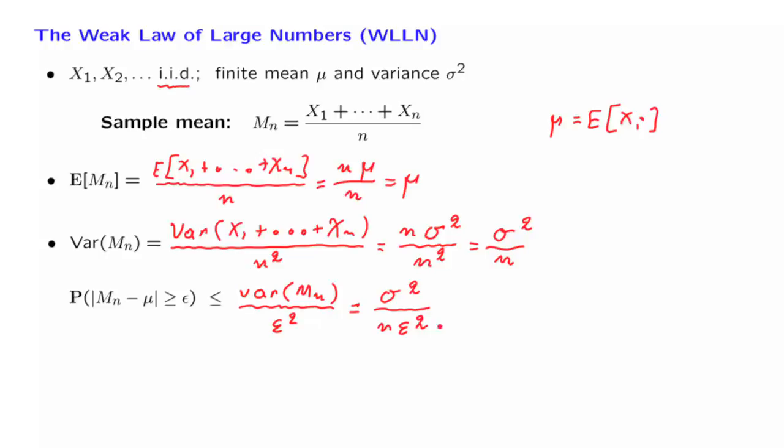And now, if we consider epsilon as a fixed number and let n go to infinity, then what we obtain is a limiting value of 0.